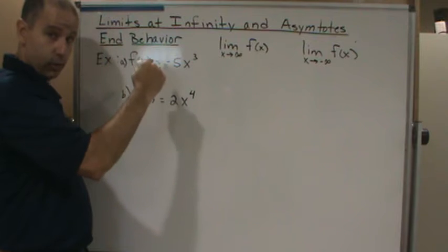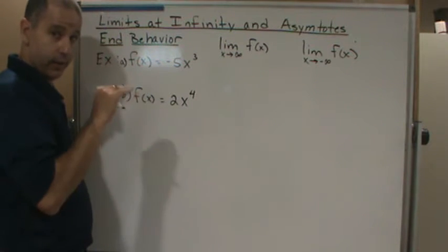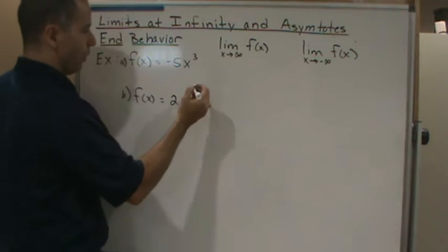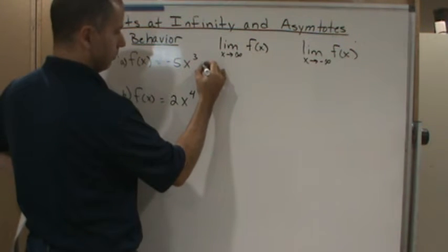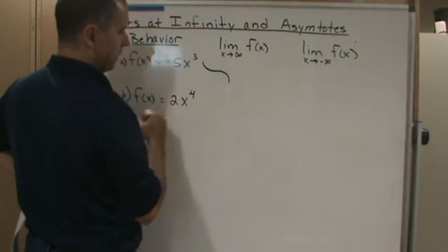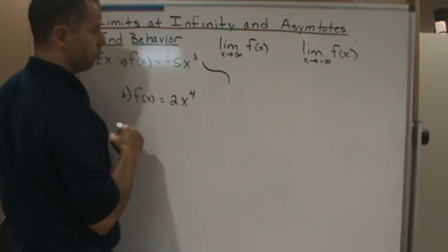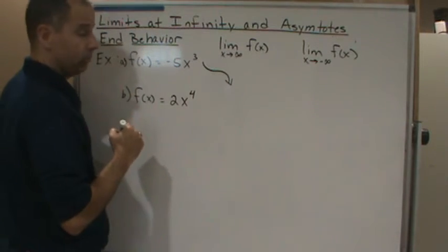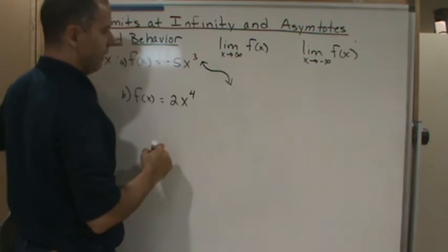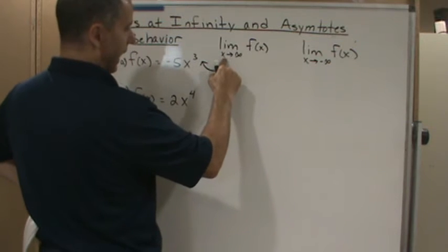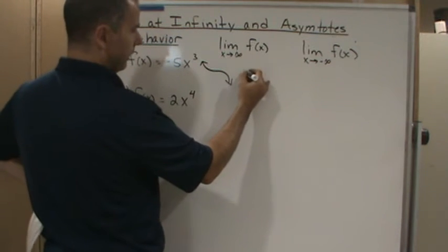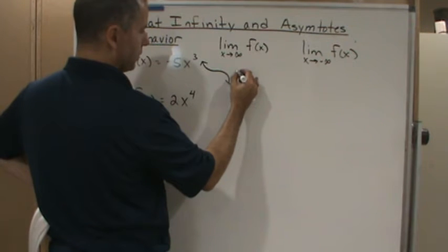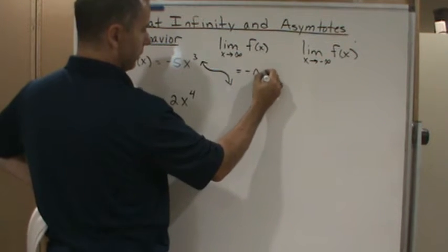It's going to look like this, something like that. So that means it's going down to the right and up to the left. So the answer: as x goes to positive infinity, f(x) is going to go towards negative infinity.